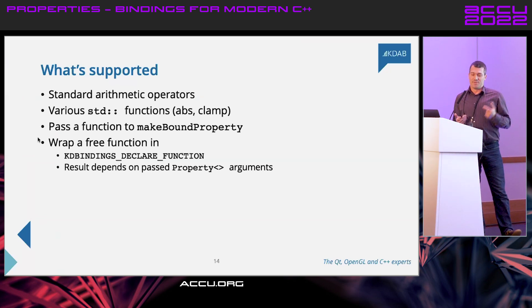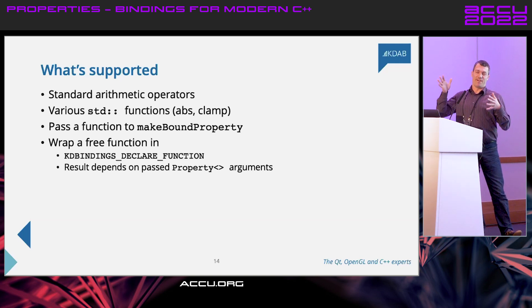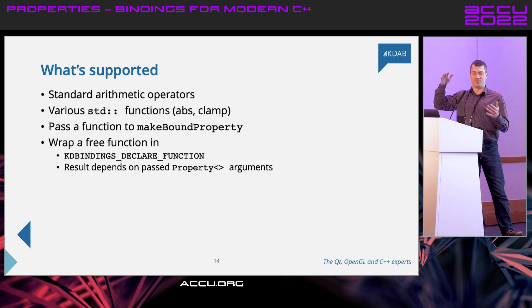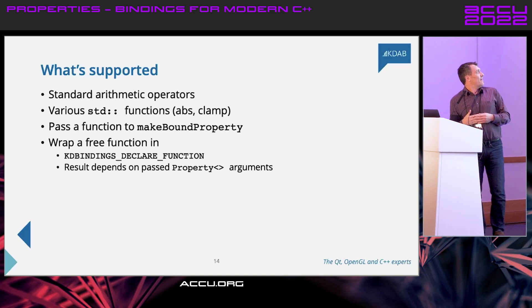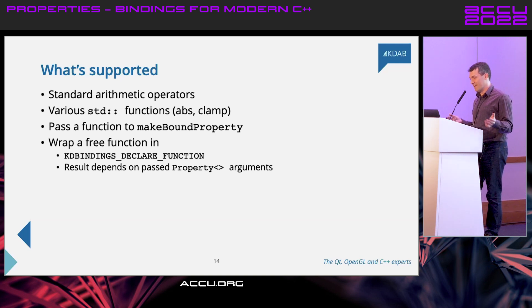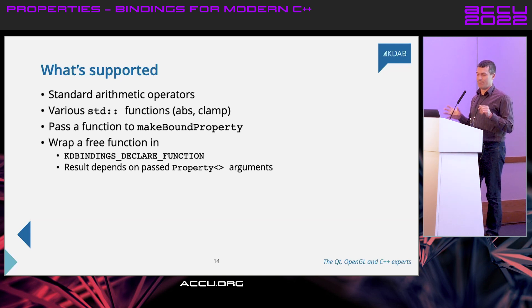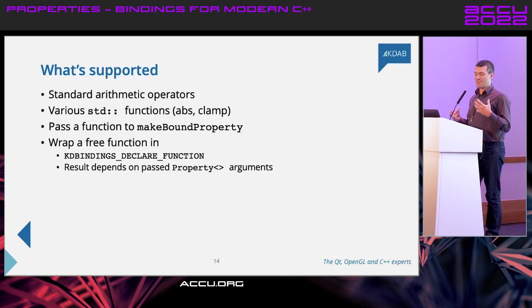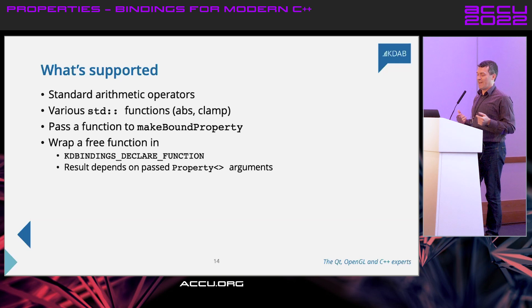What works in this kind of system? We had to do some operator overloading to make this work. The standard arithmetic operators are supported, plus helpful things in std like abs and clamp, so you can get a minimum, maximum, or clamped value as a bound property. This is very common in user interfaces where you have a range and the value should be what the user entered but no bigger or smaller than the bounds. You can also pass any function to make_bound_property with a list of properties it depends on and we'll capture and track those. And there's also a macro where you can declare a free function and specify how it interacts with and tracks properties.